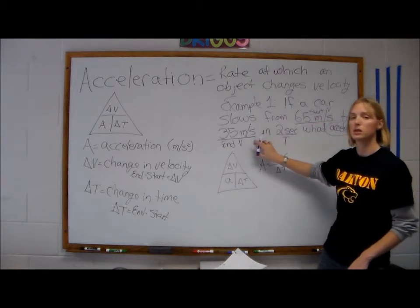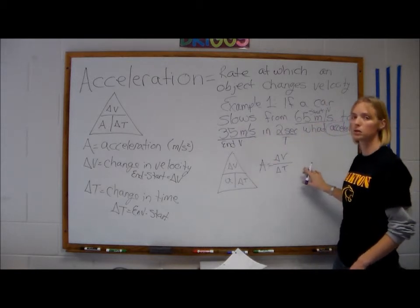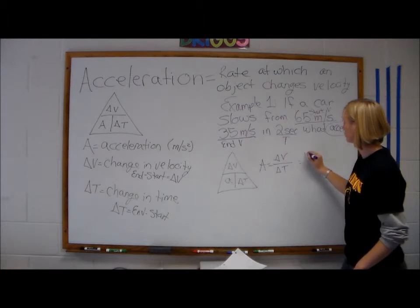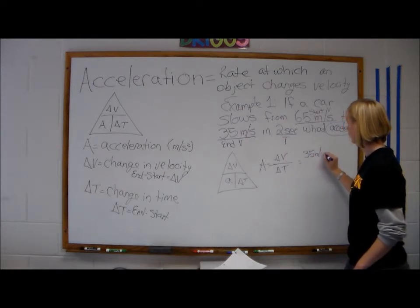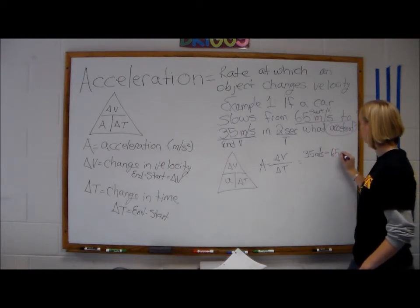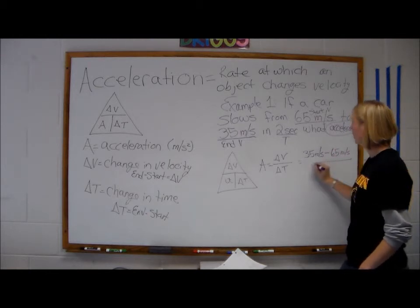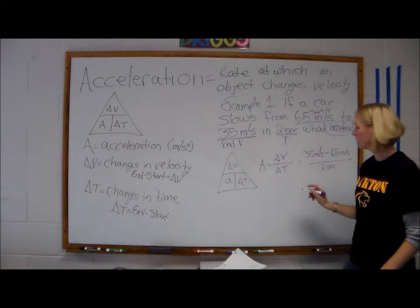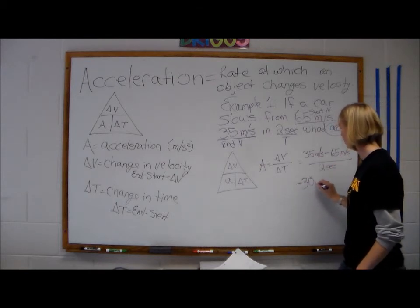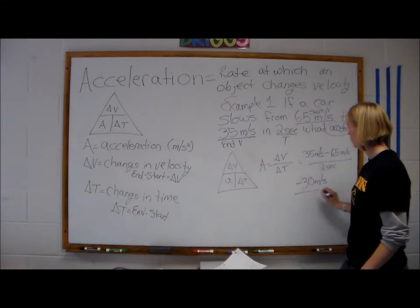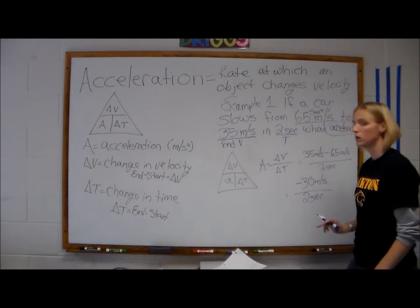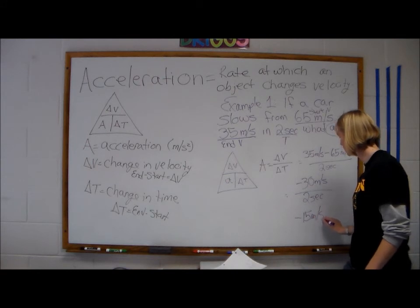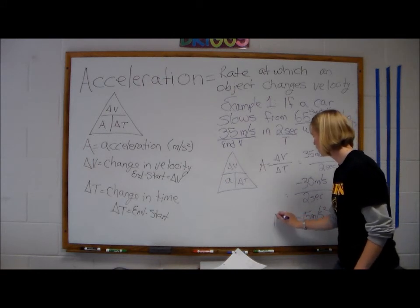We know we had two different velocities, so we're going to have to find our total velocity before we can solve for acceleration. You're going to do ending minus starting: 35 meters per second minus 65 meters per second, then divide by two seconds. 35 minus 65 is negative 30 meters per second. Dividing by two seconds gives us negative 15 meters per second squared, which equals our acceleration.